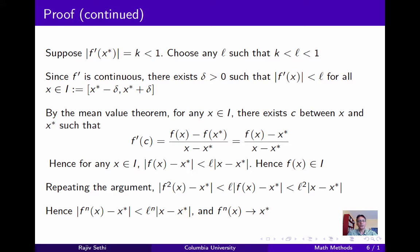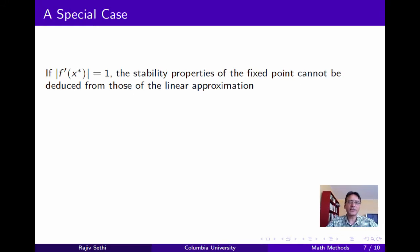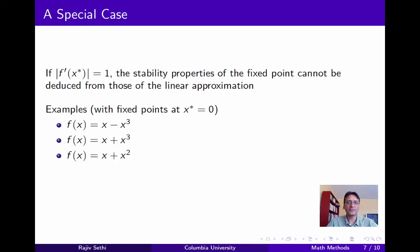This shows that when the slope of the function f at x-star is strictly less than 1, x-star is locally asymptotically stable in the non-linear system. You can use a very similar argument to show that if this slope is greater than 1, then the rest point at x-star is unstable in the non-linear system. But what if we have the special case in which the slope has absolute value exactly equal to 1? In that case, the stability properties of the fixed point can't be deduced from those of the linear approximation. You can see this by looking at the three examples on the slide. Each has a fixed point at x-star equal to 0 with slope of absolute value equal to 1, but in the first example we have a sink, in the second a source, and in the third an unstable fixed point that is neither a sink nor a source. So in the knife-edge case, the linear approximation isn't helpful in deducing stability properties of the non-linear system.